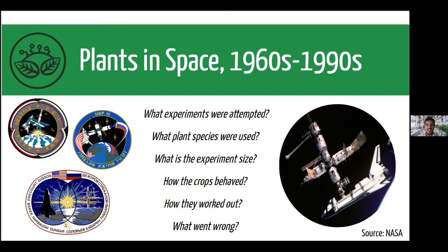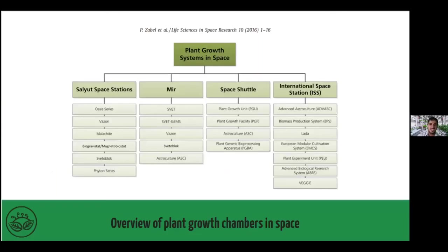Some questions these studies can provide answers to: what experiments were attempted, what plant species were used, what was the experiment size, how crops behaved in the space environment, how they worked out, and what went wrong — this is also a very interesting question. Here is an overview about plant growth chambers used in these studies, from the Salyut Space Station to the ISS, showing the many plant growth chambers that addressed these studies.